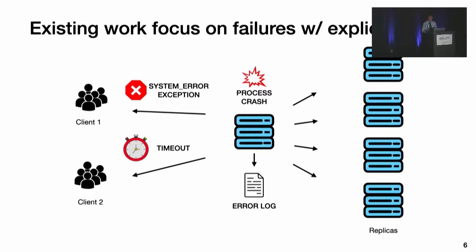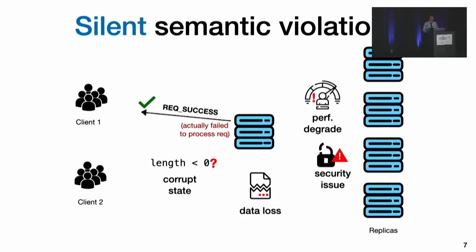When semantic violations occur, the system or users may observe some explicit errors, such as client exceptions and timeouts, which is still good news because existing solutions can detect such failures and react. But the bad news is when a system is operational but silently breaks the semantics without explicit error signals. Such silent semantic violations are problematic because they can cause catastrophic consequences, while users and other components are misled by the seemingly normal behavior and do not take any action.